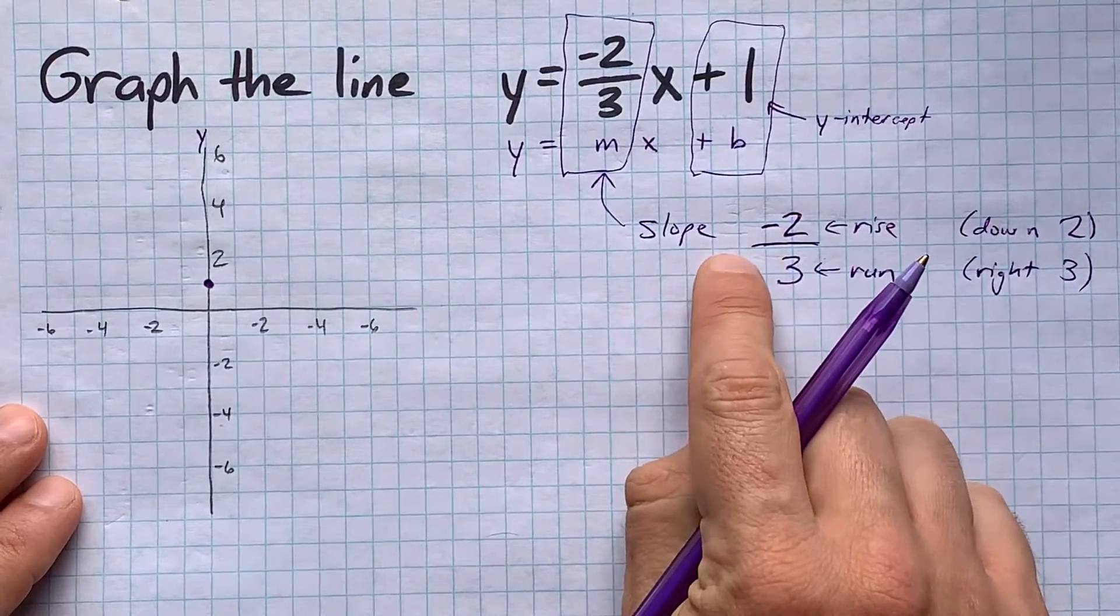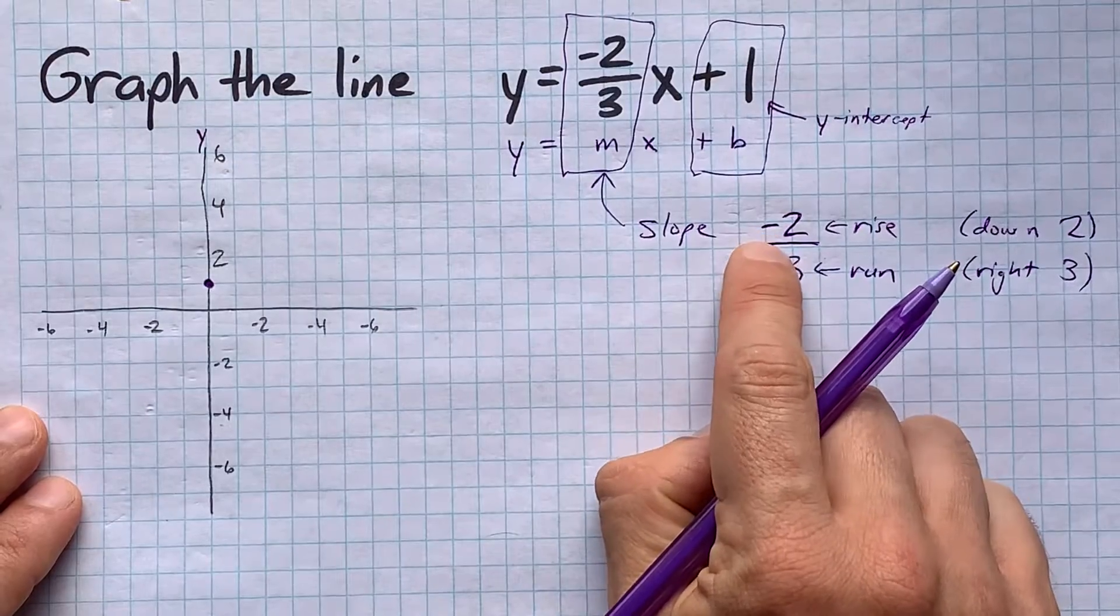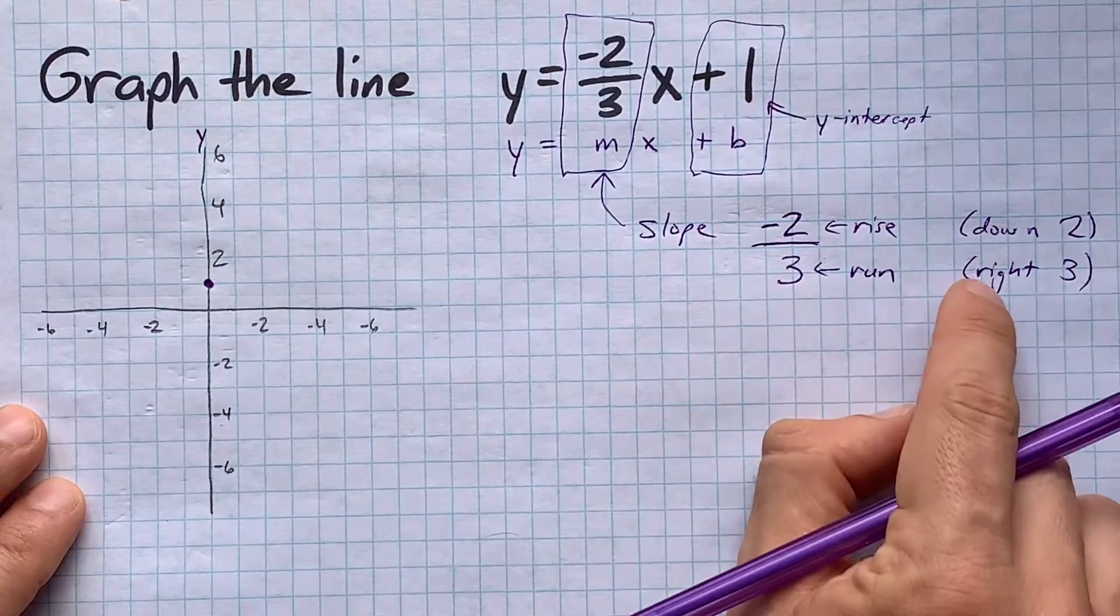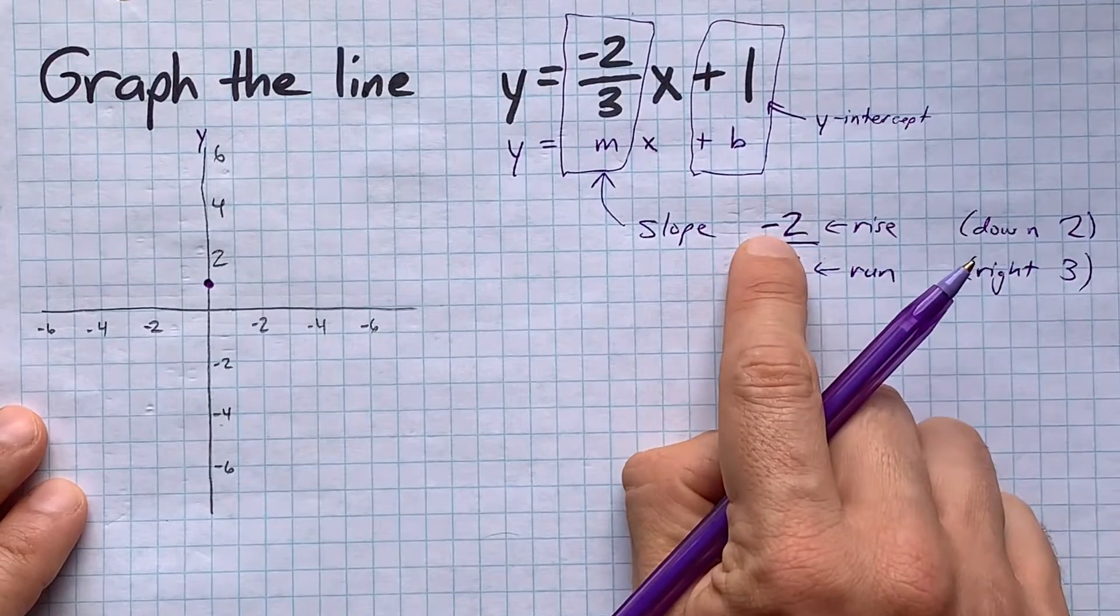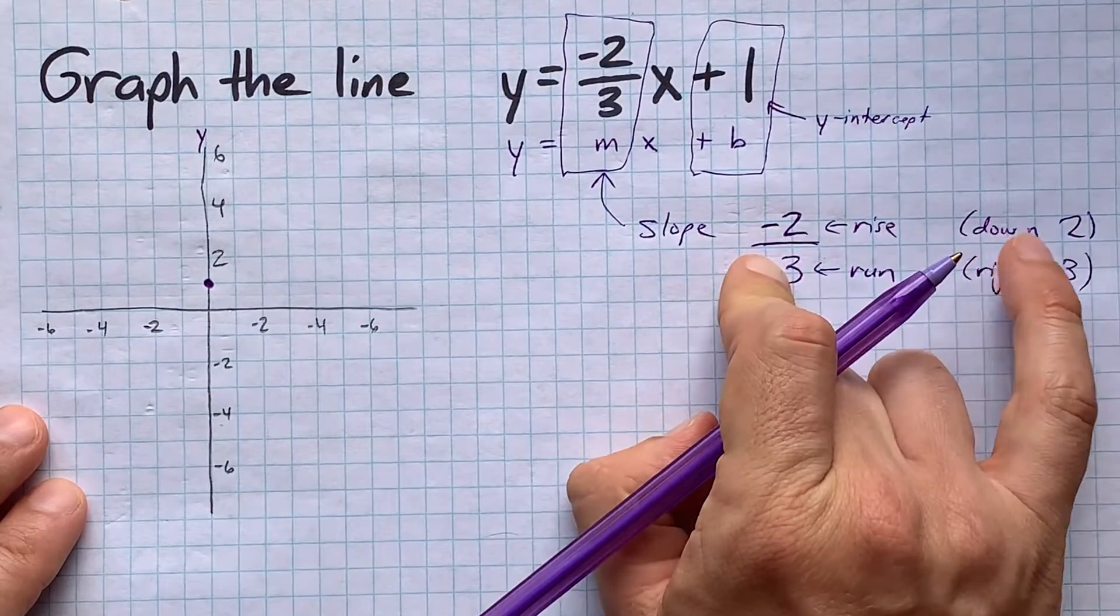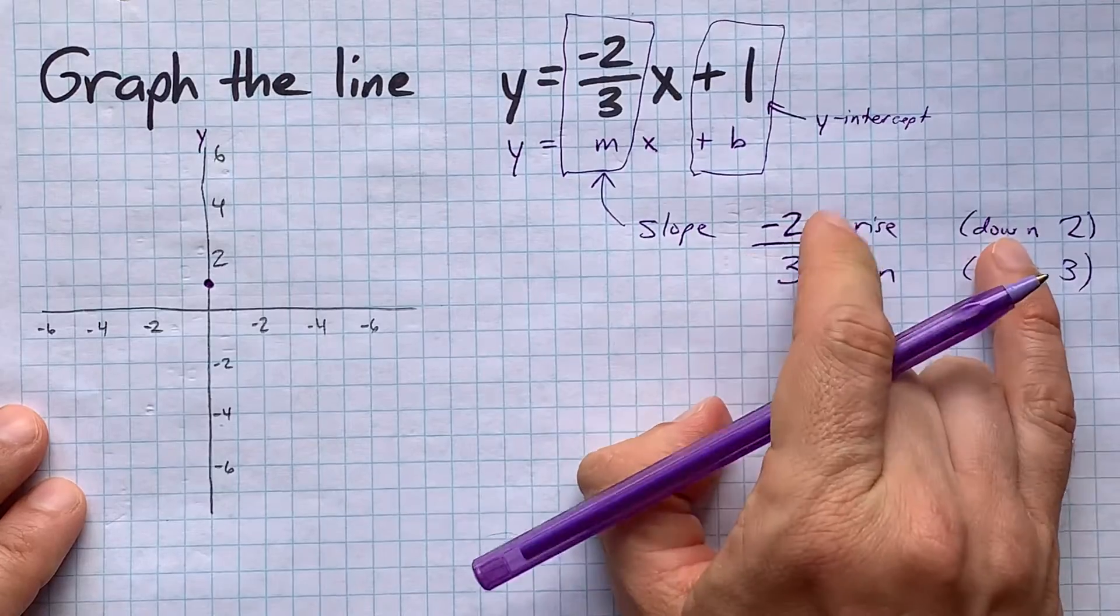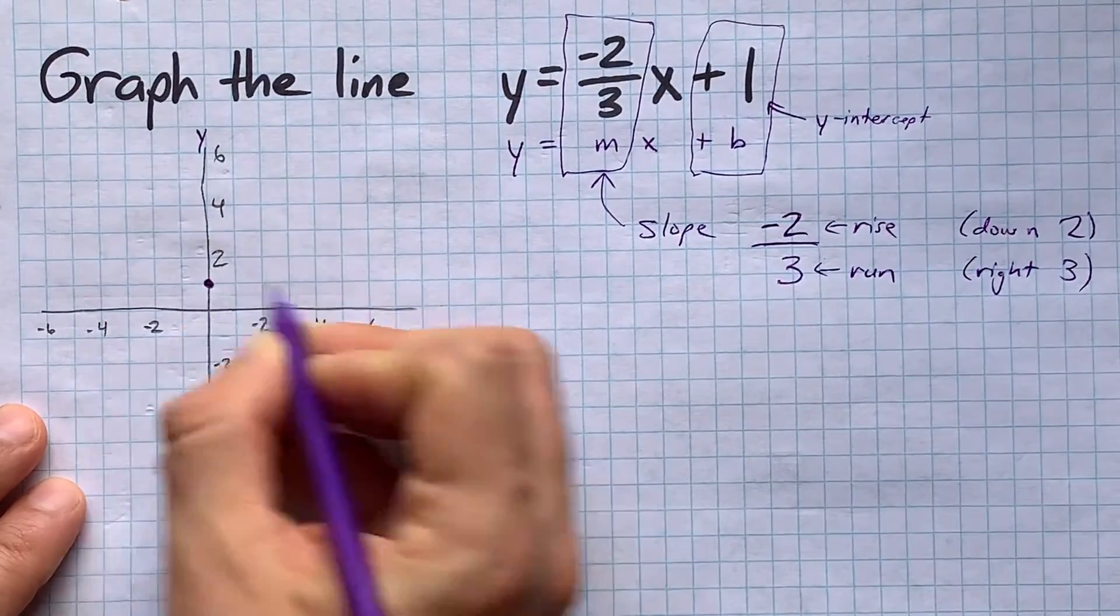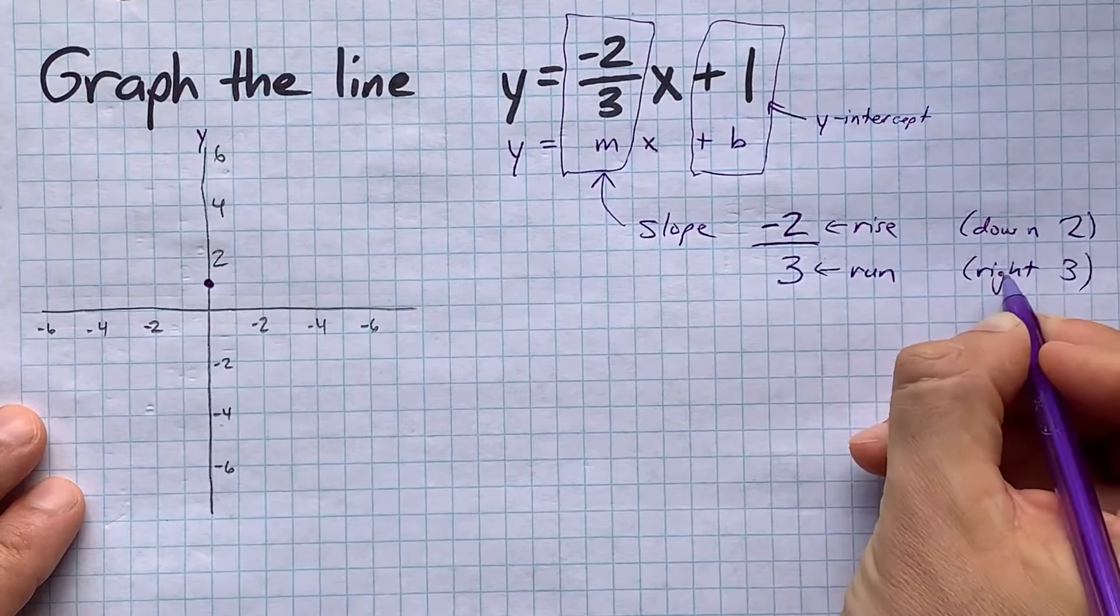Please note, I said put the negative in the numerator if there is one there. That way my run is always positive and to the right. And then the negative here controls whether or not you're going up or down for your rise, okay? So from this point that we drew, I want you to go down two squares and right three.